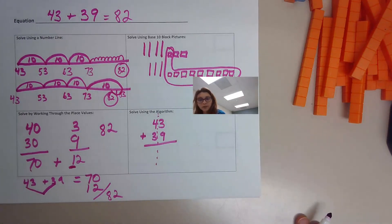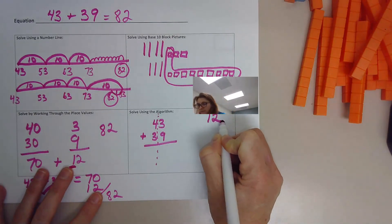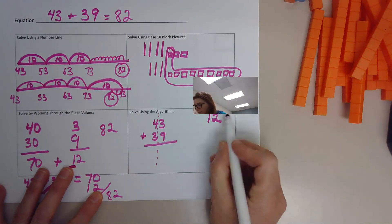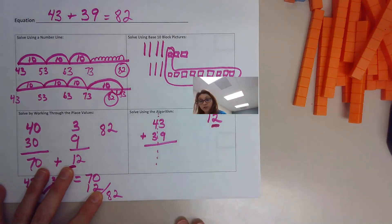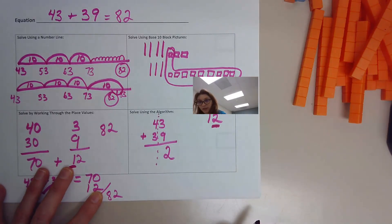These are our ones. We have nine plus three more. That's 12. But the number 12 has two digits in it. You cannot fit two digits into one place value. One place value, one digit. So if I look at the number 12, 12, I go, oh wait, this number here, the two is in the ones place value.